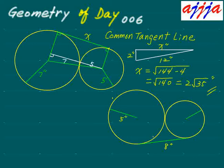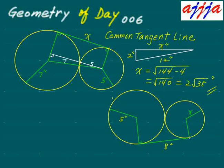Now I have another problem — almost the same but this time they give you the tangent line length first, which is 8 inches. They also give you the big circle radius as 5 inches. Then the question asks: what is the small circle radius? Let's call that x. We add another auxiliary line here — that's 90 degrees — and another line there, also 90 degrees.